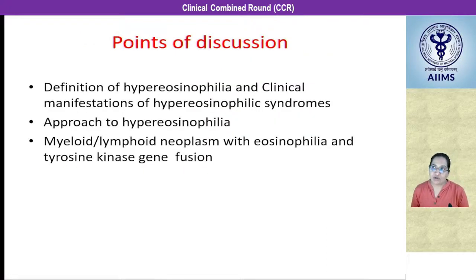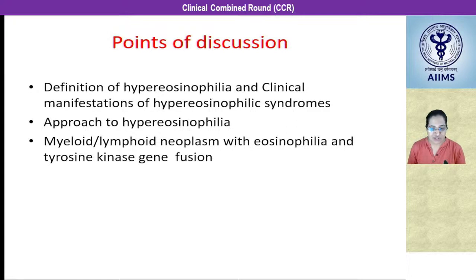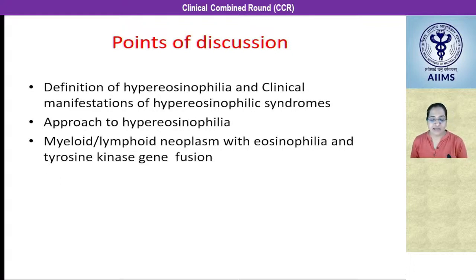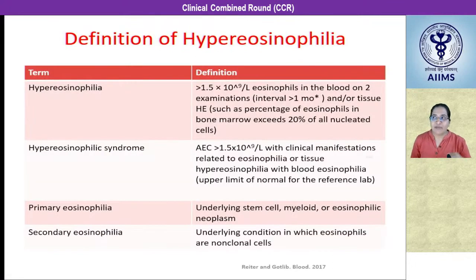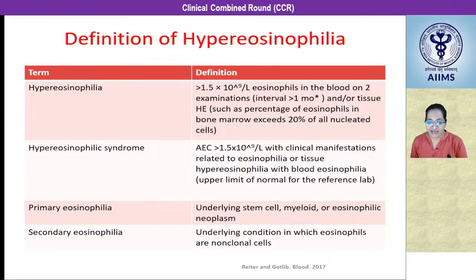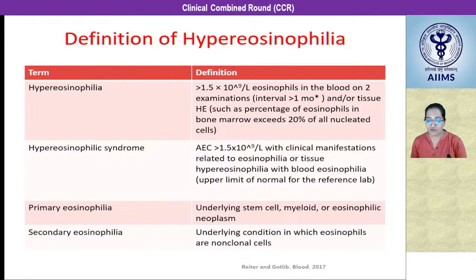Points of discussion: first, the definition of hypereosinophilia and hypereosinophilic syndrome. Hypereosinophilia is defined as an absolute eosinophil count greater than 1,500 on two occasions at least four weeks apart, without any end-organ damage. When this is associated with end-organ damage, it is called hypereosinophilic syndrome. Primary hypereosinophilia refers to clonal eosinophils due to an underlying stem cell, myeloid, or eosinophilic neoplasm, whereas secondary eosinophilia is a reactive, non-clonal increase due to an underlying condition.